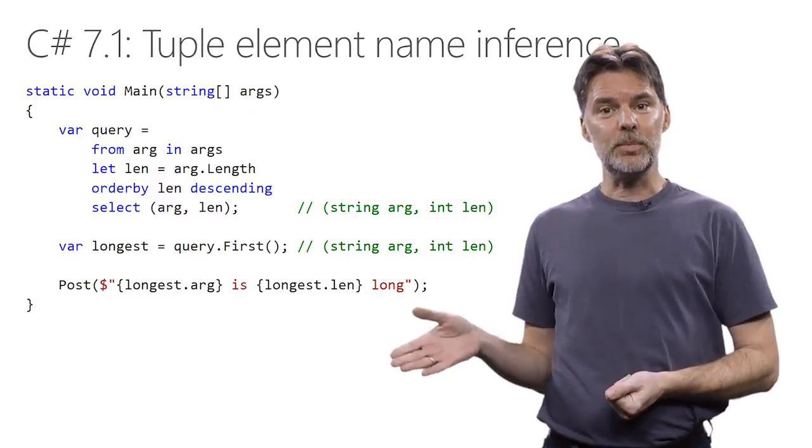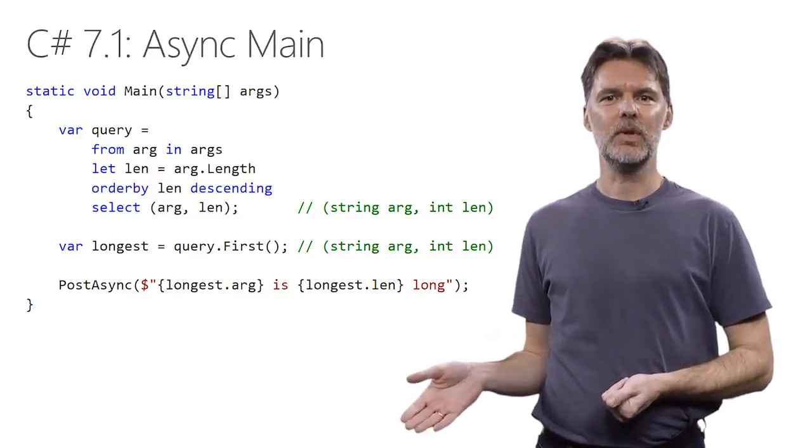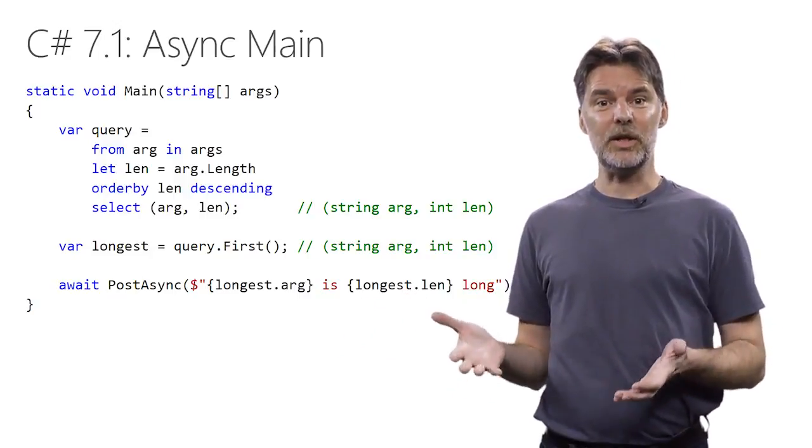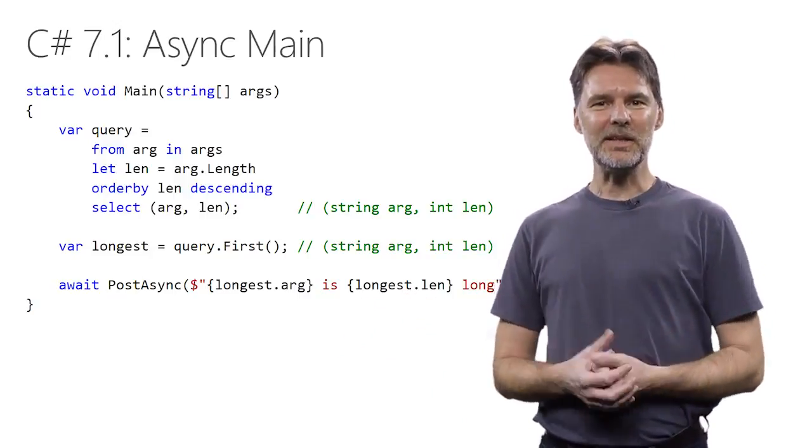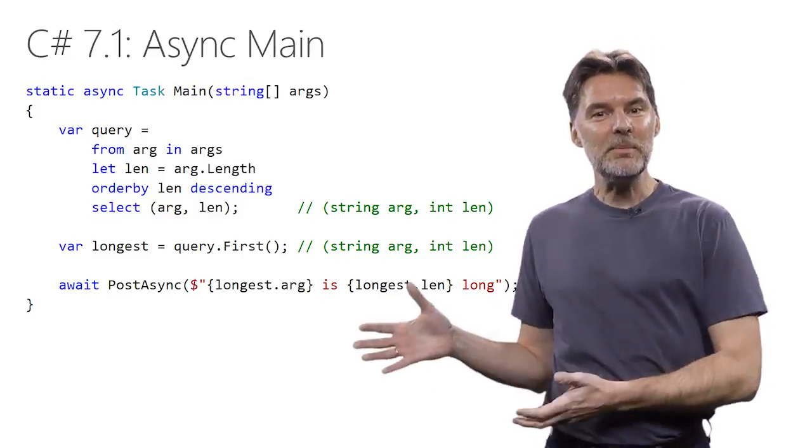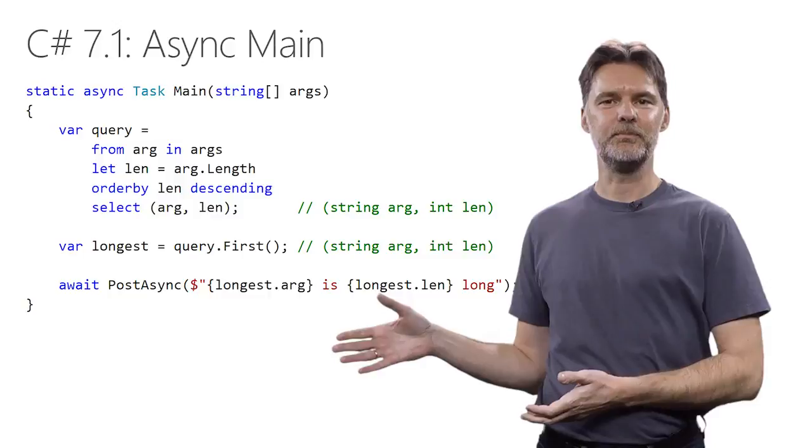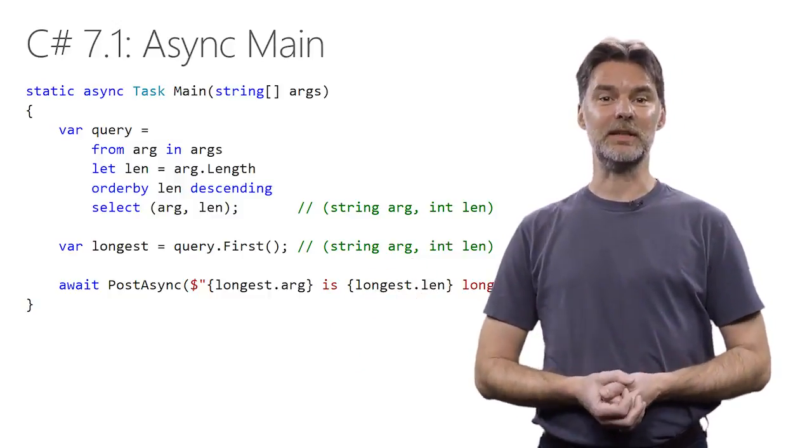Next, let's assume that the post method is asynchronous. We need to await it. But in order to do so, we need to be inside of an async method ourselves. Well, luckily in C# 7.1, the main method can be async, as long as it returns a task or a task event. This makes it a lot easier to get started with async.